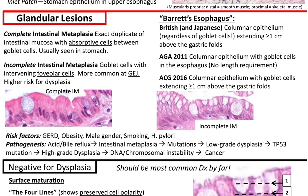Incomplete intestinal metaplasia has goblet cells with intervening foveolar cells. It's more common at the gastroesophageal junction and has a higher risk for dysplasia. One of my staff noted he looks for incomplete intestinal metaplasia when there's a background of a lot of complete intestinal metaplasia, and if that background isn't present, he has a high threshold to call it incomplete intestinal metaplasia.